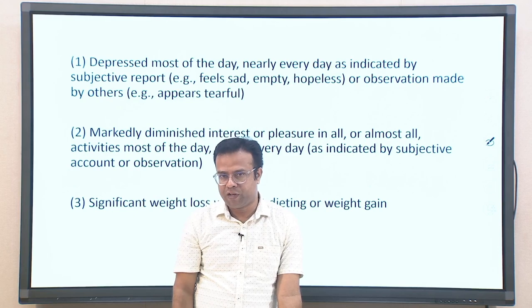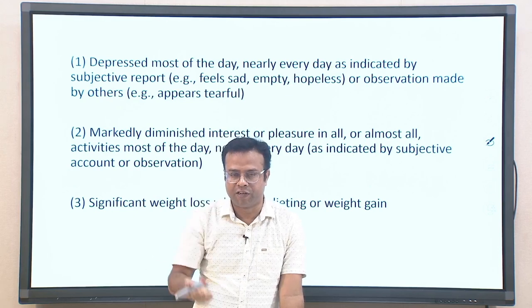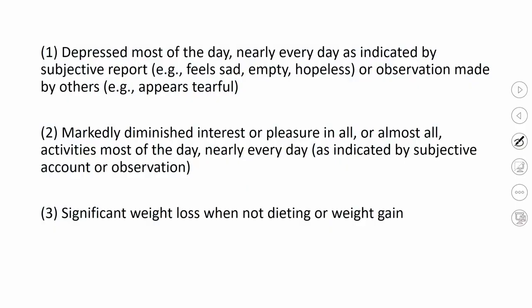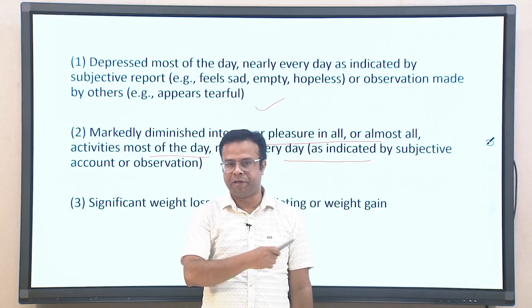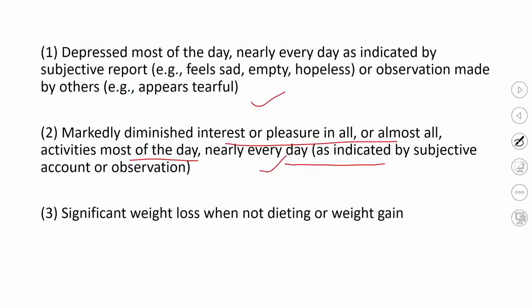The first symptom is depressed mood — consistently low mood nearly every day, as reported by the person or observable in their behavior. The second is markedly diminished interest or pleasure in almost all activities for most of the day, nearly every day. Both are typically present; at least one must be there.